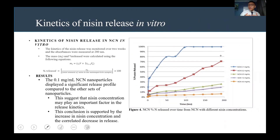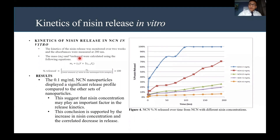To determine how much niacin was released, we performed an in vitro study to determine the kinetics of niacin release. We measured the absorbances of niacin over two weeks using a UV spectrometer at 280 nanometers, and determined mass and percent release using specific equations. We found that the 0.1 milligrams per milliliter NCN nanoparticles displayed a significant release profile, suggesting that niacin concentration may play an important factor in release kinetics — a conclusion supported by the increase in niacin concentration correlating with a decrease in release.